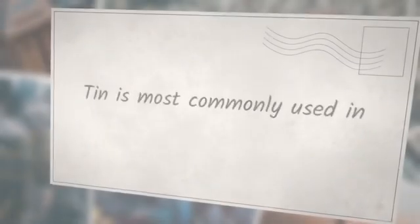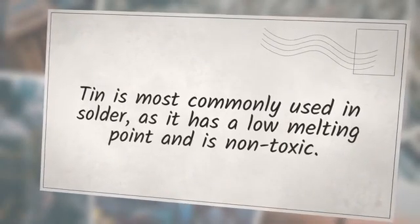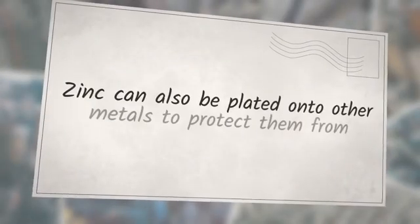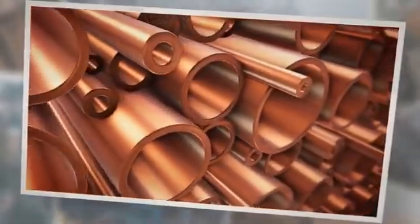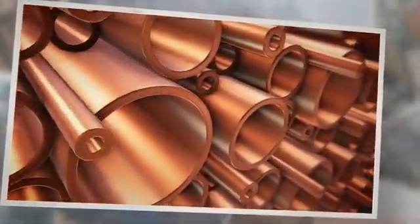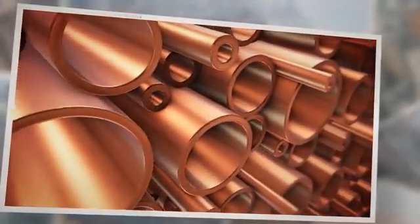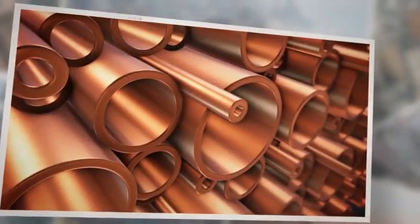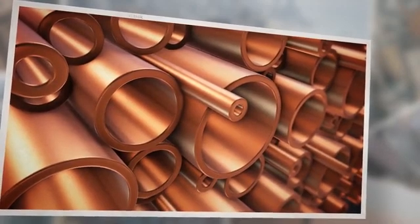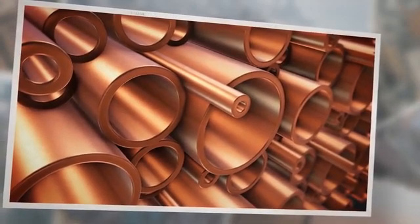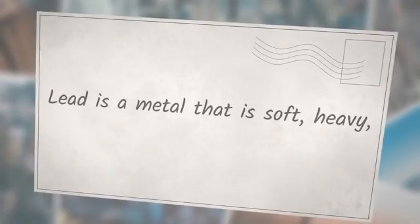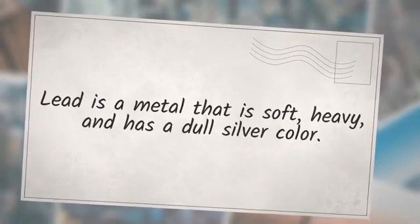Tin is most commonly used in solder, as it has a low melting point and is non-toxic. Zinc can also be plated onto other metals to protect them from corrosion. Copper is the most sought metal after aluminum, with many different grades and types, each with unique properties suitable for different applications — especially electrical wiring and plumbing. Lead is a metal that is soft, heavy, and has a dull silver color.